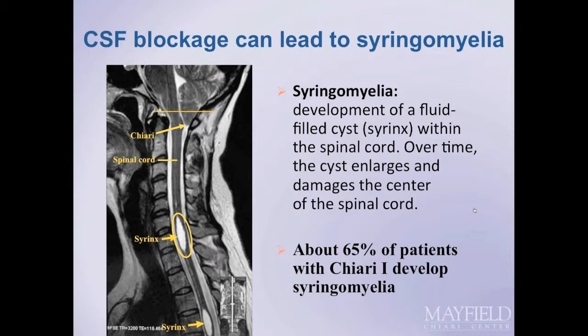Overall, about 65% of patients with Chiari malformation may also be found to have a syrinx. It's also important to know that syringomyelia can occur in patients without Chiari malformation and have a different underlying cause, such as tumor or trauma.